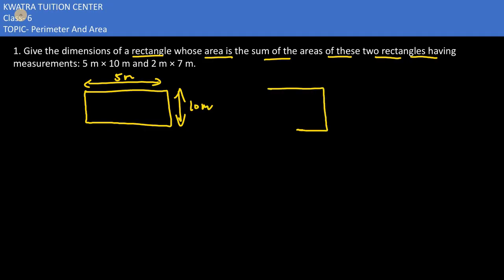Two rectangles have been given, and it is given that your length is 5 meter and width is 10 meter. What has been given in the second rectangle?